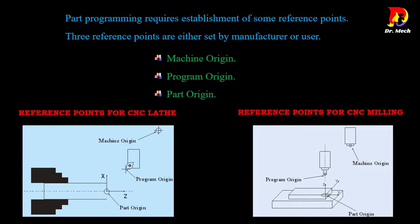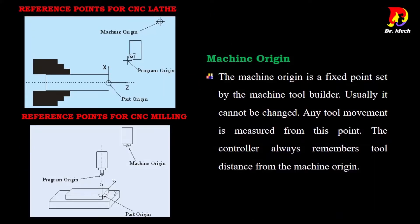Machine origin: The machine origin is a fixed point set by the machine tool builder. Usually it cannot be changed. Any tool movement is measured from this point. The controller always remembers tool distance from the machine origin.